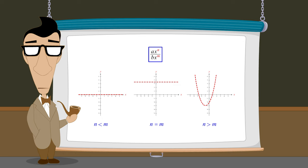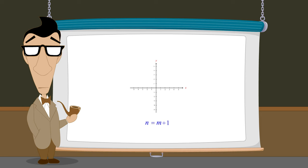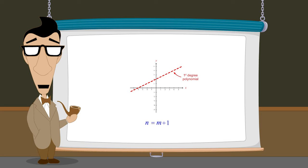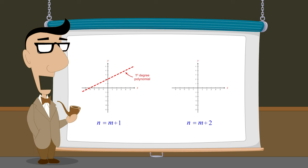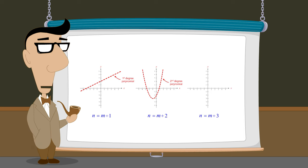The difference between n and m determines the degree of the curve that describes that asymptote. If n is one greater than m, the asymptote will be described by a first-degree polynomial function whose graph is a slanted line — in other words, an oblique asymptote. If n is two greater than m, the asymptote will be described by a second-degree polynomial whose graph is a parabola. If n is three greater than m, the asymptote will be described by a third-degree polynomial whose graph is a cubic curve, and so on.